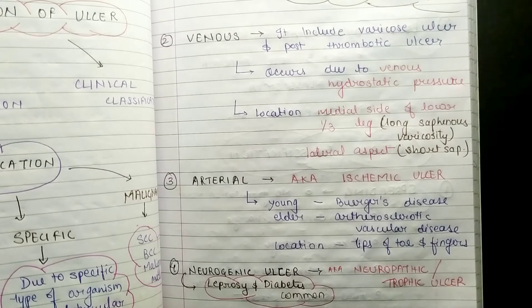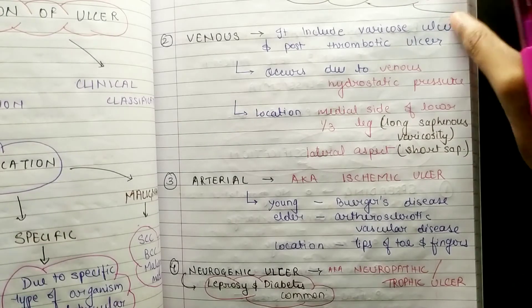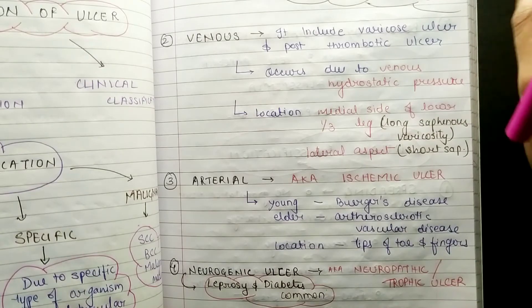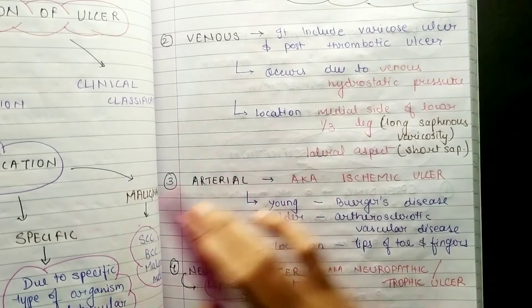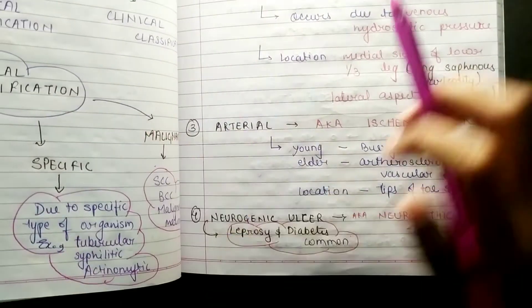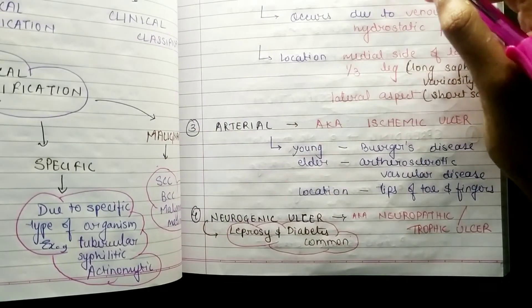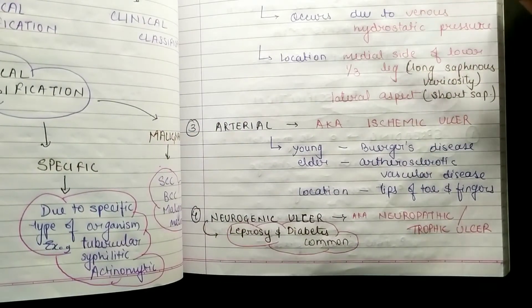The footballer's ulcer can be non-healing if trauma is repeated continuously. It is due to direct trauma, so traumatic ulcer is also known as footballer's ulcer.